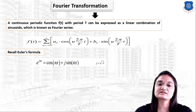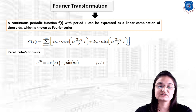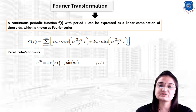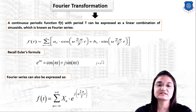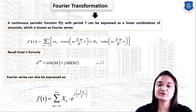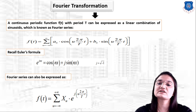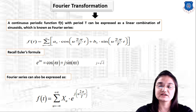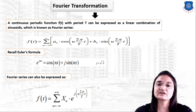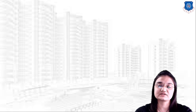Recalling Euler's formula: e^(jnx) = cos(nx) + j·sin(nx), where j = √(−1), the Fourier series can also be expressed as: f(t) = Σ (u = −∞ to +∞) Xᵤ · e^(j·u·2π/T · t). This is the representation of Fourier transformation, and with this equation we can easily convert a function from the time domain to the frequency domain.